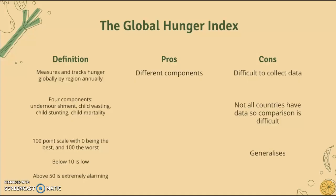The pros of the Global Hunger Index are that it has different components — like the Global Food Security Index, it's a composite indicator — so you're not just measuring one thing but different factors, which is much more robust than a singular measure like child mortality alone. The cons are that it can be difficult to collect data, not all countries have data so comparison is difficult, it generalizes as an average and might not represent the entire population, and it tends to focus on child factors, so instances of adult hunger might not be taken into account.